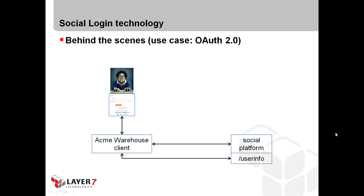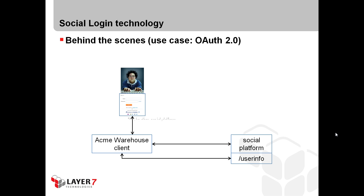The browser would call an endpoint implemented on the Acme Warehouse server. This Acme Warehouse client will then return a 302 redirect to the browser, and the location will be the social login page — specifically the authorization website of the social platform. So the browser will redirect the user to the social platform.